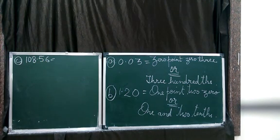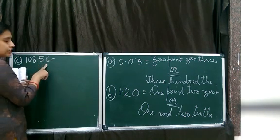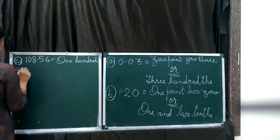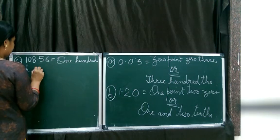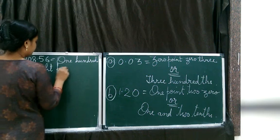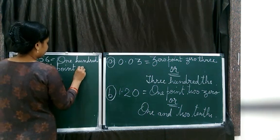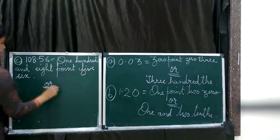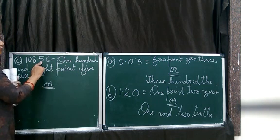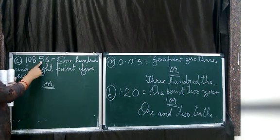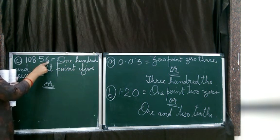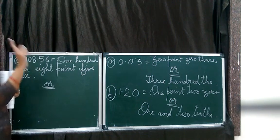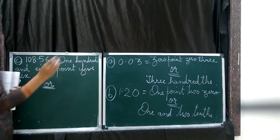How do we read the number? 108 point 5 6. Why are we not saying point fifty six? Because 5 is under tenths place. You can say fifty, but 6 is not ones, right? It is not ones, it is hundredths, correct? So you will not say fifty six hundredths.